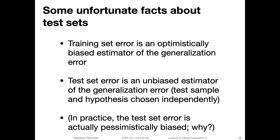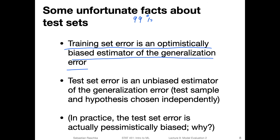Before we go on to the next video, I want to close with one more slide on some unfortunate facts about test sets. First, the training set error is an optimistically biased estimator of the generalization error. This means the training set error is not trustworthy as an estimate of generalization error because due to overfitting it's usually better than the test error. For example, we may get 99% training accuracy, but the real performance could be much lower - perhaps only 80% test accuracy, a gap of 19 points. The model would be heavily overfitting, and the training accuracy would be an overly optimistic estimate of the generalization accuracy.